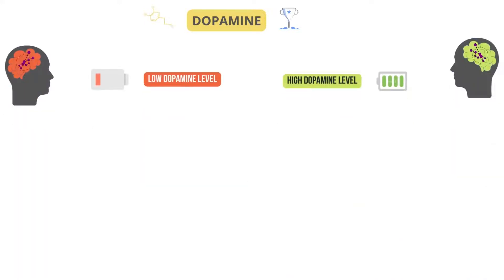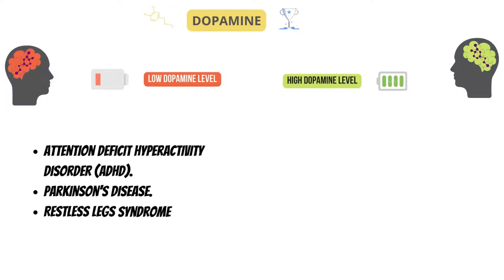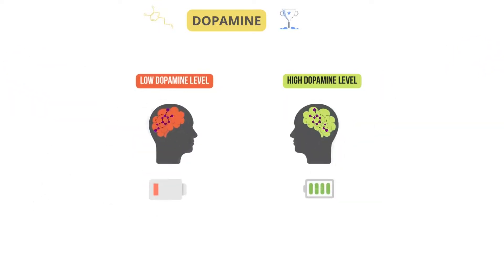Diseases associated with low levels of dopamine are attention deficit hyperactivity disorder, Parkinson's disease, and restless leg syndrome. Whereas with high levels of dopamine, there could be mania, obesity, and addiction. And diseases associated with both high and low levels of dopamine is schizophrenia.